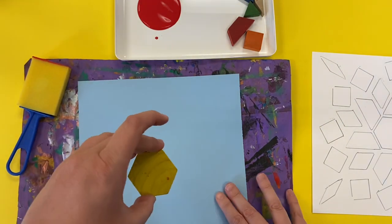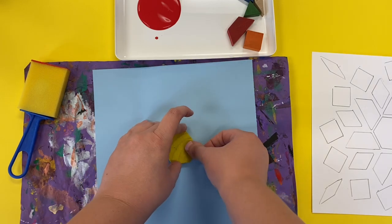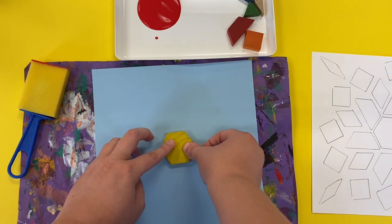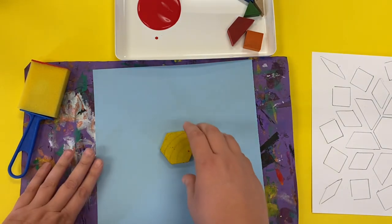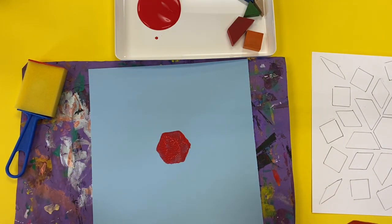Then I'm going to float my shape down and press it into the spot where it needs to go. I'll just pick it right back up and there I have my shape printed onto my paper.